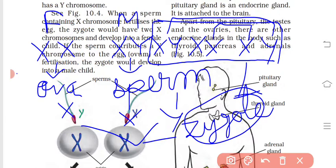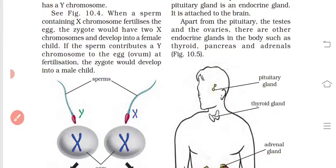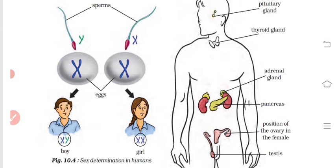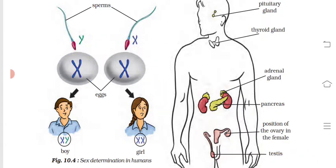If the sperm carries X, it fuses with the egg's X to form XX — which equals a female (girl). If the sperm carries Y, it fuses with the egg's X to form XY — which equals a male (boy). That is how we determine whether the fetus is male or female.